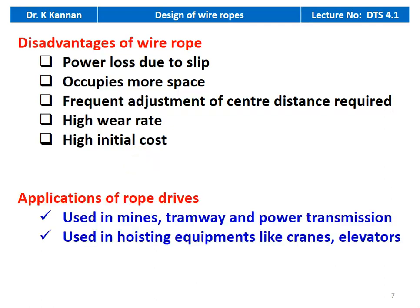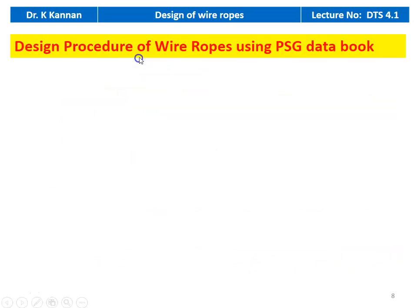The applications of wire ropes: wire rope drive is used in mines, tramways, power transmission, and in hoisting equipment like cranes and elevators. All material handling equipment use wire rope drives. The design procedure of wire ropes uses the PSG design data book — equations are available in chapter 9, and using chapter 9 we can design the wire rope.